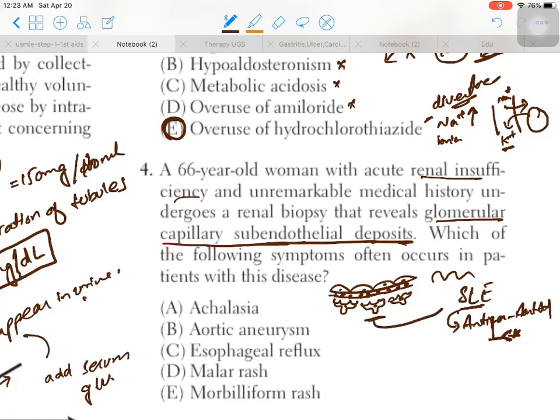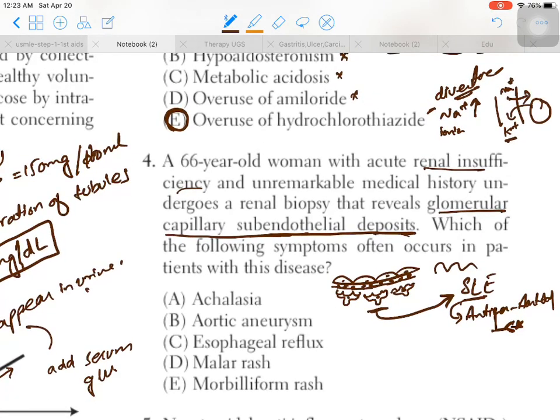Other signs and symptoms in this condition: achalasia - no, achalasia is a condition in which the lower esophageal sphincter fails to relax. Aortic aneurysm - no. Esophageal reflux - not. Malar rash - yes. Morbilliform rash - no. Malar rash is a very common sign. It's a butterfly-shaped dermatitis in the region of the face around the eyes and nose. This butterfly-shaped rash region is called malar rash.